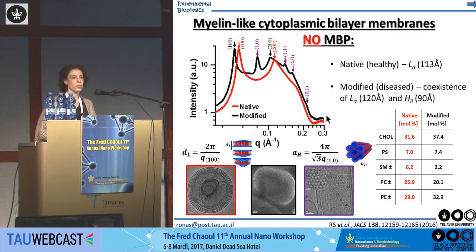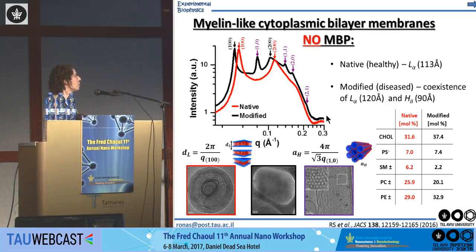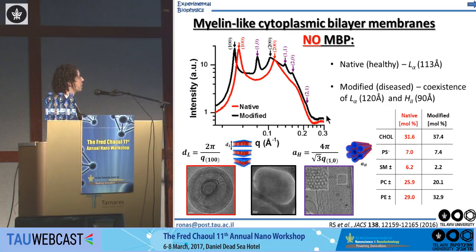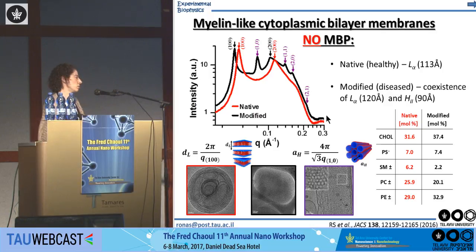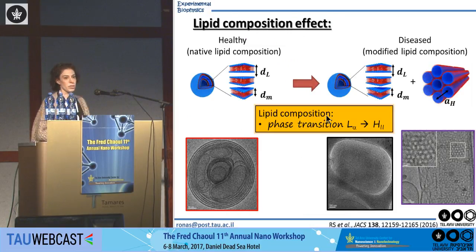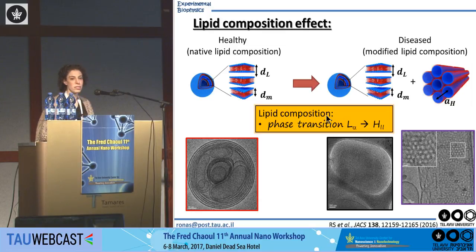Our first experiment was on healthy and diseased lipid composition only, without myelin basic protein. The scattering data clearly showed distinguished correlation peaks that we can index to one lamellar phase in the healthy composition — the red arrows — and coexistence of two phases in the diseased composition: a lamellar phase, the black arrows, and an inverted hexagonal phase, a honeycomb structure, denoted by the purple arrows. These phases were also noticeable in the cryo-EM, performed by our collaborator Maor from the Ishii Talmon group at the Technion. So lipid stoichiometry has an effect on the structural self-assembly of the lipids, from a healthy stack of lamellars to a diseased inverted hexagonal.